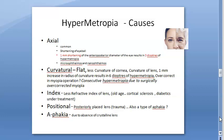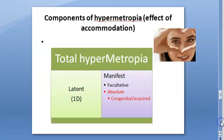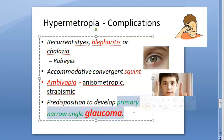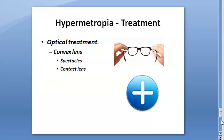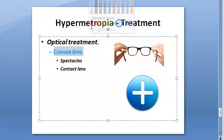Causes of hypermetropia: axial, curvature, index, positional, and aphakia. Clinical types: congenital, acquired, functional, simple, and pathological. Components: total, latent, manifest, facultative, and absolute. Complications include blepharitis, squint, amblyopia, and primary narrow-angle glaucoma. Remember: narrow-angle glaucoma comes in hypermetropia; open-angle glaucoma is associated with myopia, because myopics have a big eyeball while hypermetropes have a small eyeball.